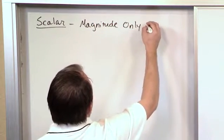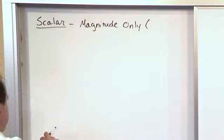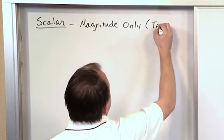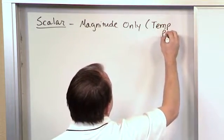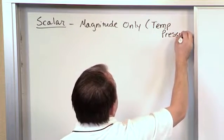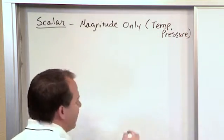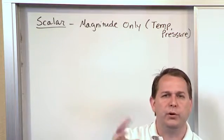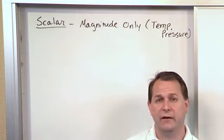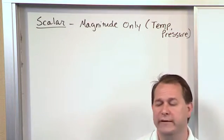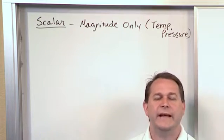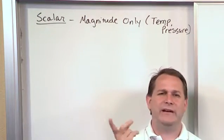So examples of a scalar might be temperature and pressure. There are many other quantities that you could pull out of thin air to describe what a scalar is or what a scalar would represent. But a scalar is a number that doesn't really have any associated direction.